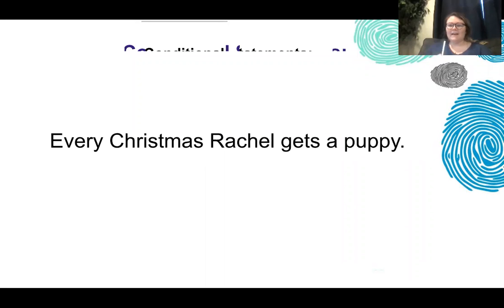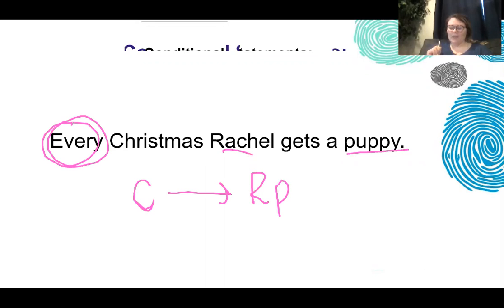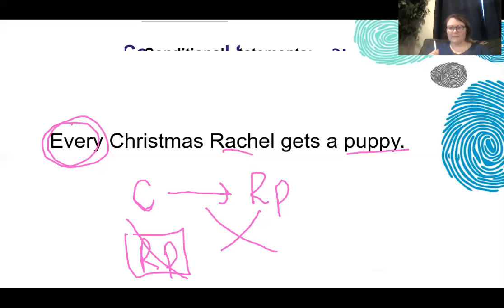Go ahead and hit pause if you want and try this one for yourself. Every Christmas — so what does this mean? This means that if it is Christmastime, we know that Rachel gets a puppy. What is our contrapositive? We have to flip it and reverse it. So if Rachel does not get a puppy, that means it's not Christmas.